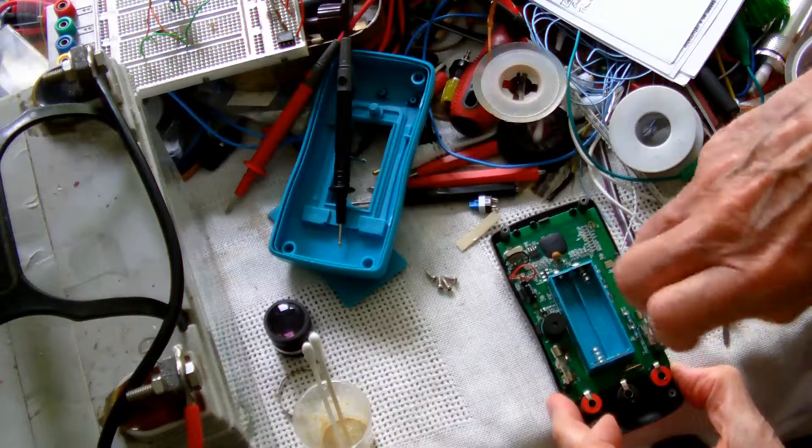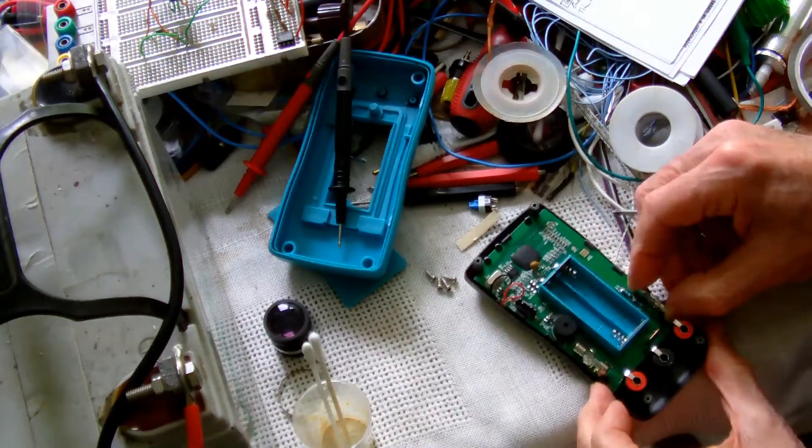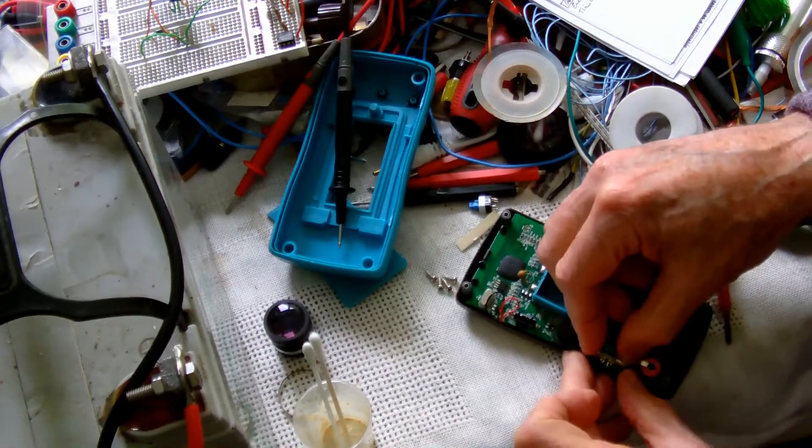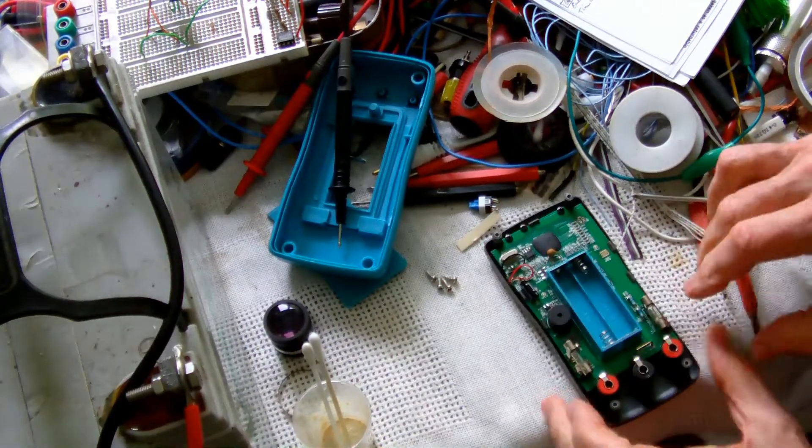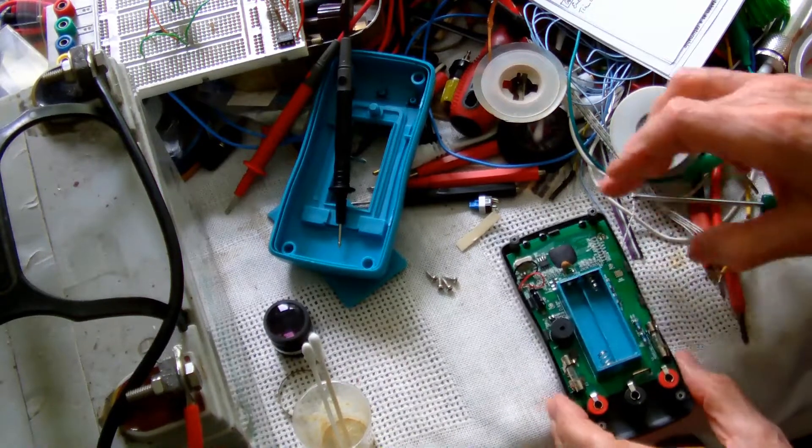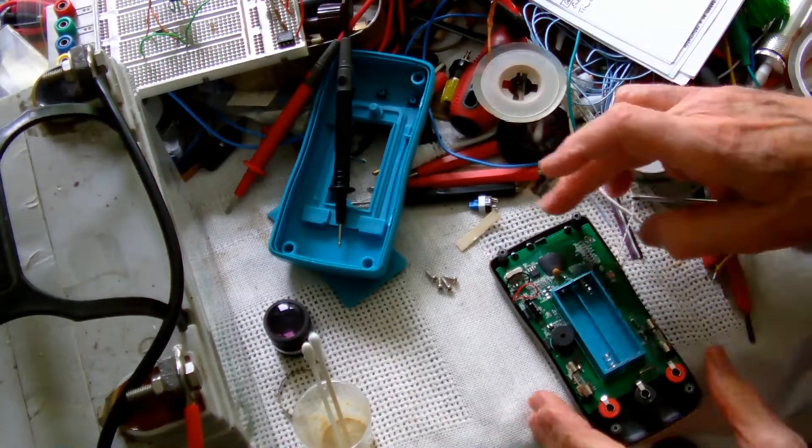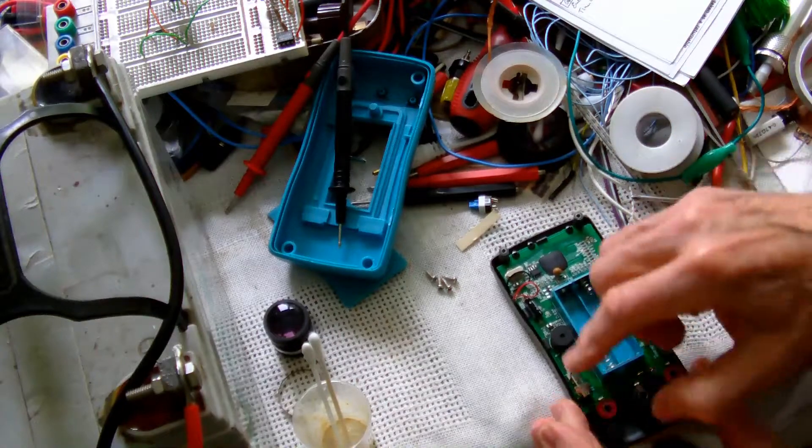It's all a bit of a bodge up. You can get surface mount fuses but you'd have to change the mountings for them and all the rest of it, so I've just done a bodge. I've now put in the three black screws which hold it in so it's all neat and tidy.